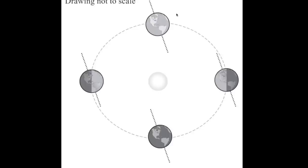On the equinoxes — on the fall or the spring equinox — neither hemisphere is tilted towards or away from the Sun. You would get equal amounts of daylight everywhere on the Earth on those two days, and a fairly constant amount of the directness of that light.